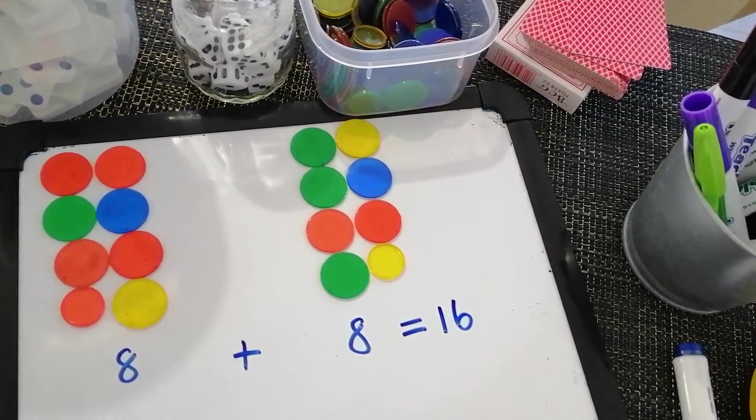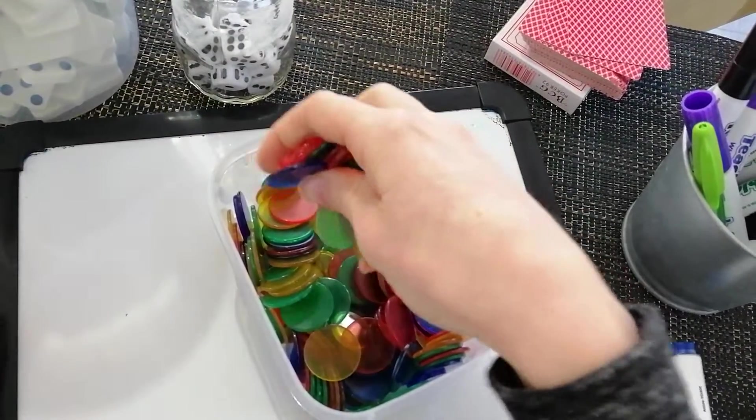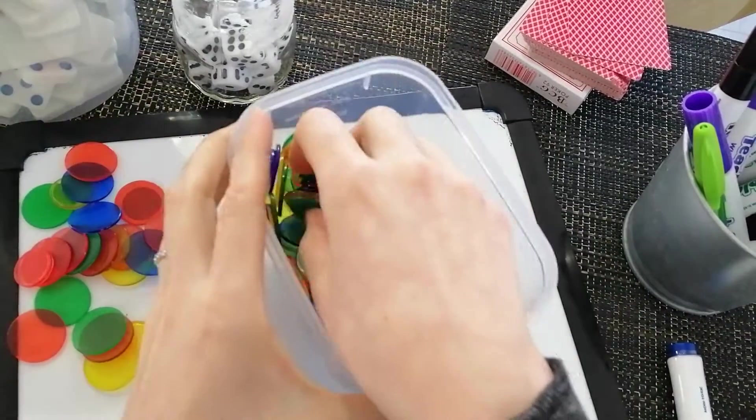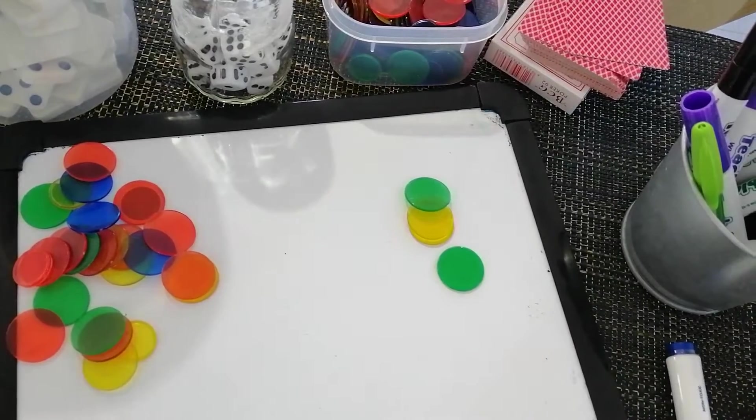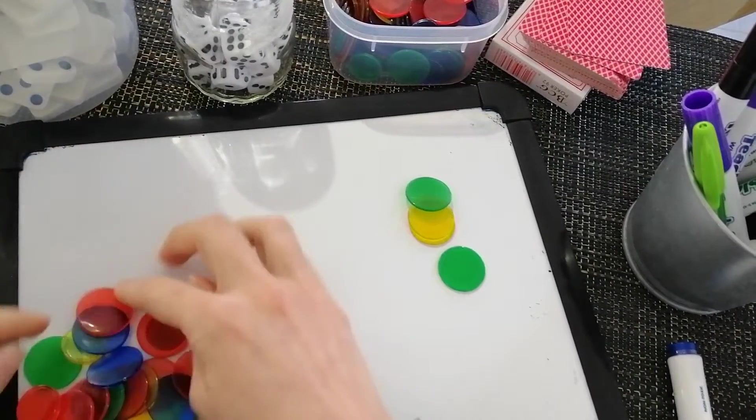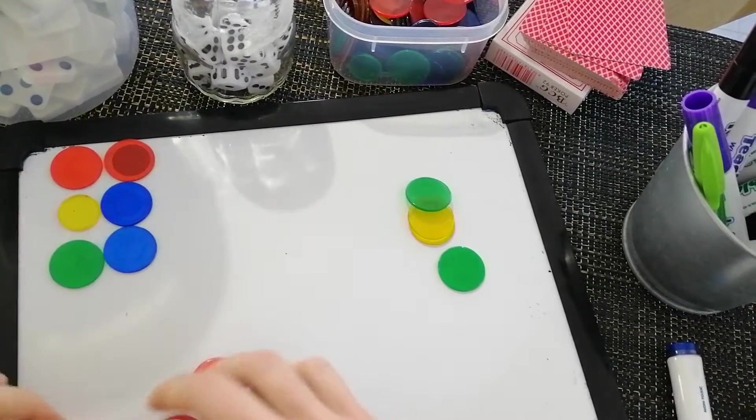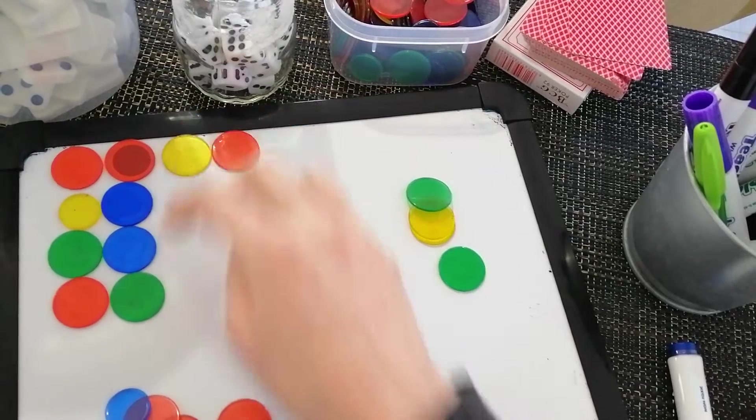One more time with counters. I'm going to dig in. I'm going to take a big pile this time. One more time. Keeping them separated so I know there's two parts to my number sentence. Two, four, six, eight, 10.